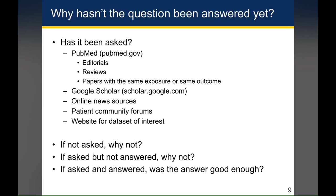So always ask yourself: if the question has not been asked, why not? If the question has been asked but not answered, how come? Maybe it's not possible to answer it using that data set for some reason. And if the question has been asked and answered, was the answer good enough? Was it an exact answer to your question, or was it related but not the same? It's something you can build on by leveraging what's already been done to support the argument for the question you want to answer.